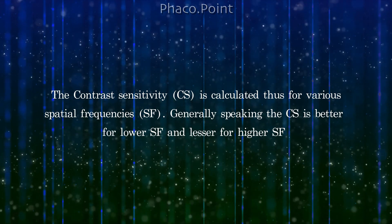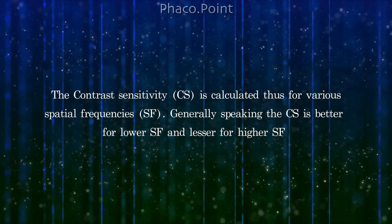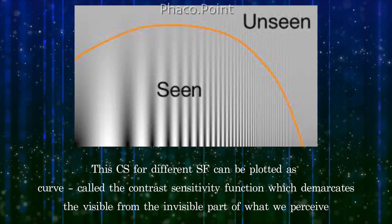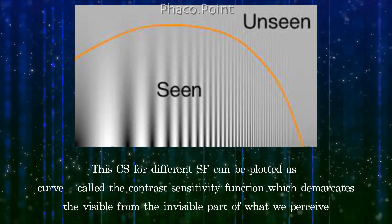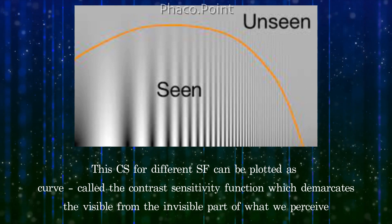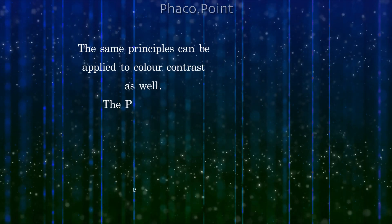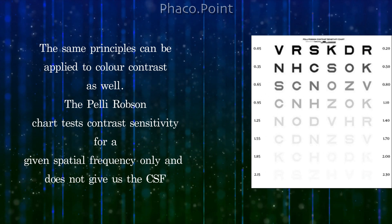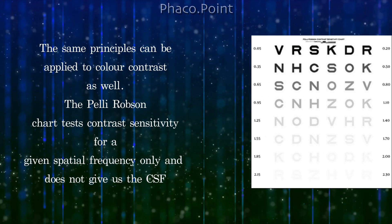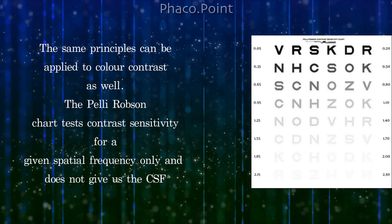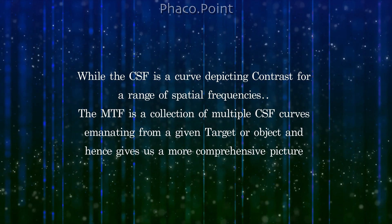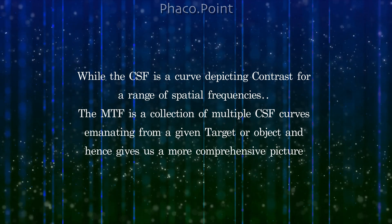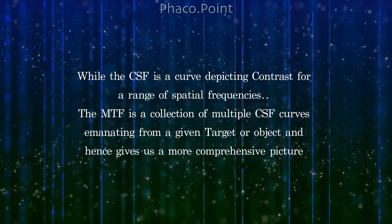Generally speaking, contrast sensitivity is much better for lower spatial frequency and lesser for higher. This contrast sensitivity for different spatial frequencies can be plotted as a curve called the contrast sensitivity function, which demarcates the visible from the invisible part of our visible spectrum. The same principles can be applied to color contrast as well. The Pelli-Robson chart tests contrast sensitivity for a given spatial frequency only and does not give us the contrast sensitivity function. While the contrast sensitivity function depicts contrast for a range of spatial frequencies, the MTF is a collection of multiple contrast sensitivity function curves from a given target and gives a more comprehensive picture.